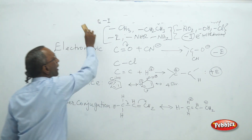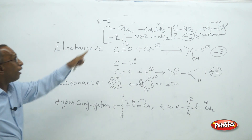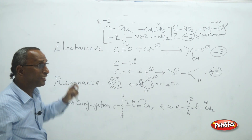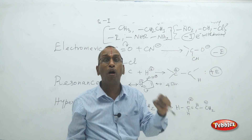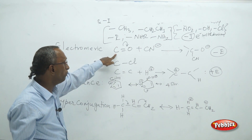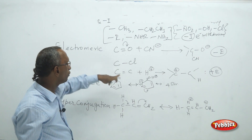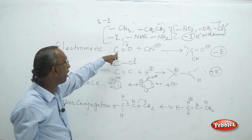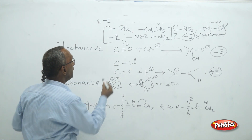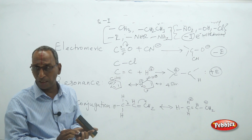Now we will see what is meant by the electromeric effect. All these effects are due to covalent bonds — that must be kept in mind. The electromeric effect is observed for multiple-bonded systems, for example the carbonyl group. In double bonds, one bond is a sigma bond and the other is a pi bond. The pi bond is weaker than the sigma bond.